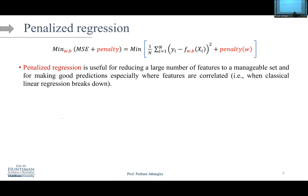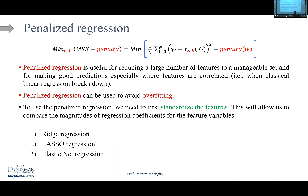We also call regularization 'penalized regression.' We have three types: ridge regression, lasso, and elastic net. They can be used to avoid overfitting. Before applying penalized regression, your first task is to standardize all the variables — both y and x. There are many ways to do this, but the simplest is to subtract the mean and divide by standard deviation. This is called normalization or standardization.